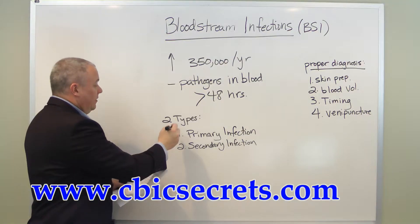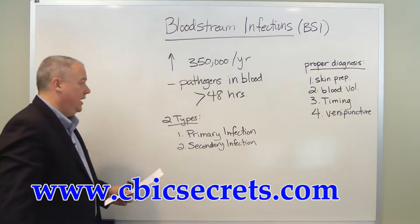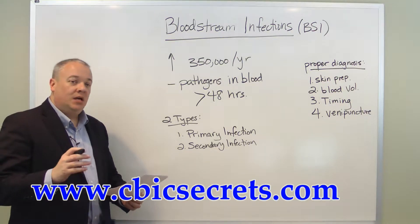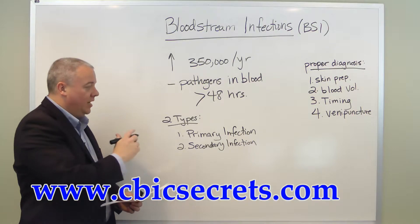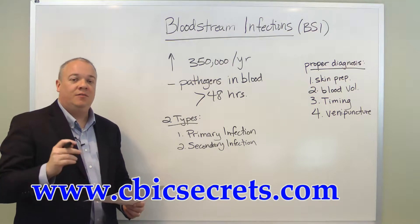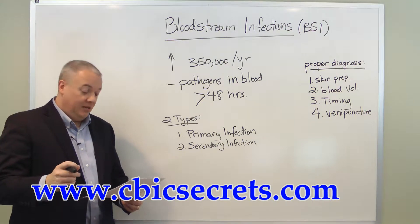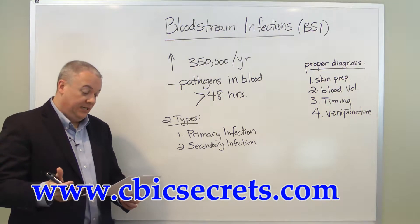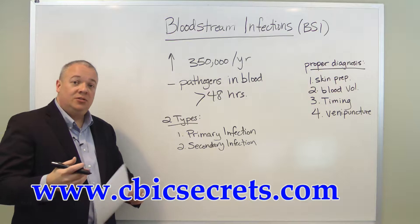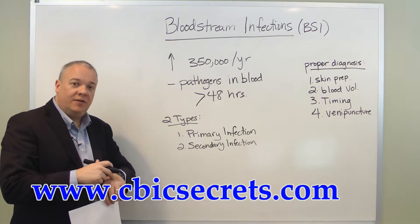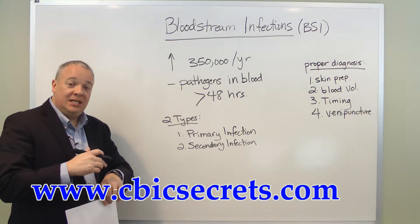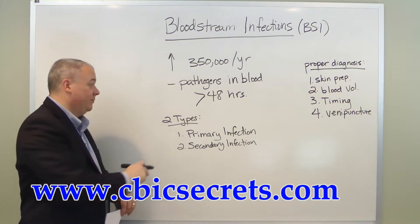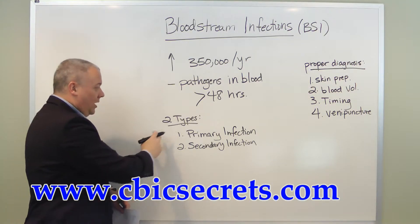When we think about bloodstream infections, there are two types to keep in mind when they are discovered in the blood of the patient. The first is primary infection — an infection in the blood that has been introduced through an intravascular device, such as an IV that has been contaminated and has directly introduced the pathogen to the blood.